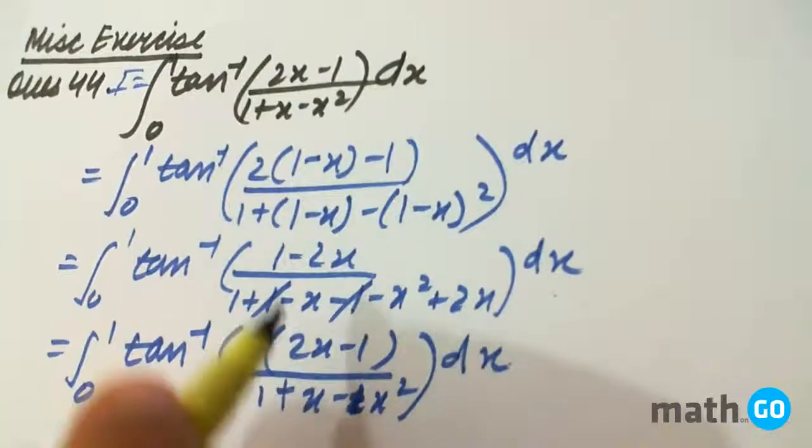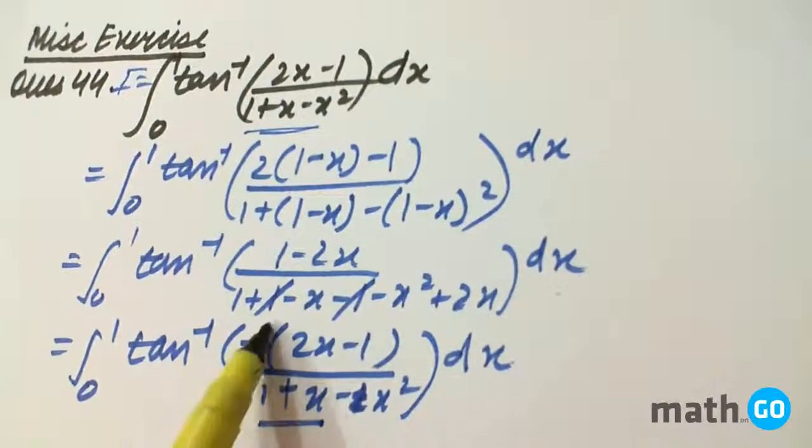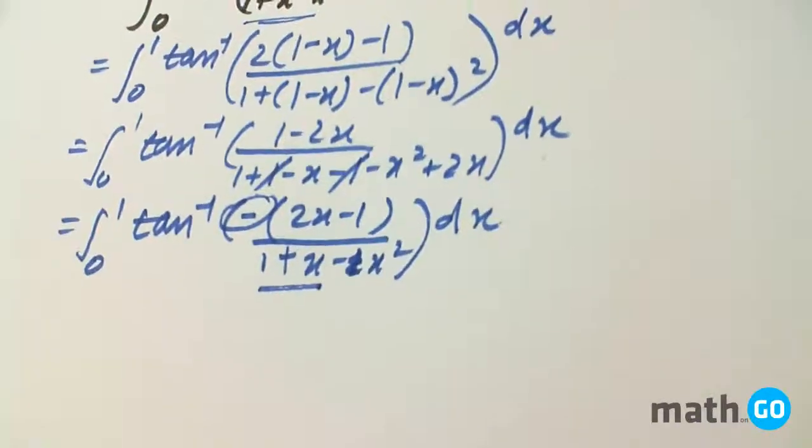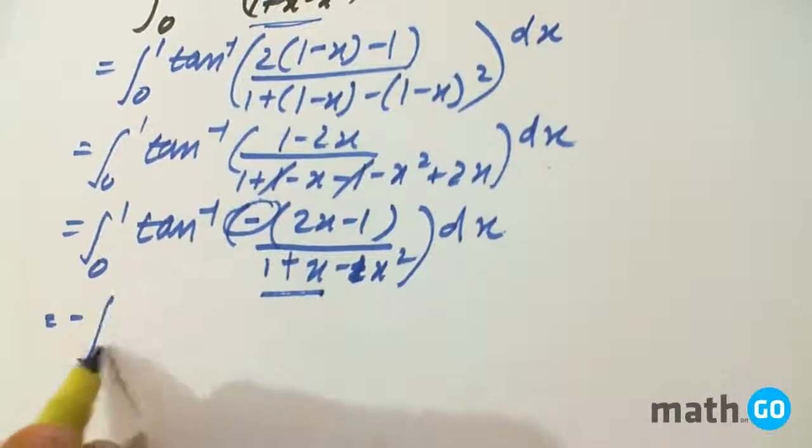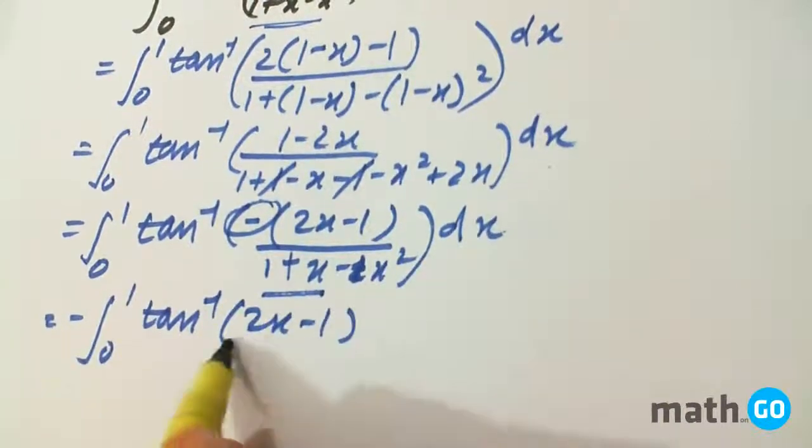Now we compare this expression with this. It has a minus sign and from tan inverse we can take out the minus sign, so it will be minus of 0 to 1 tan inverse (2x-1)/(1+x-x²) dx.